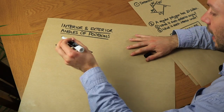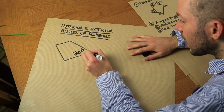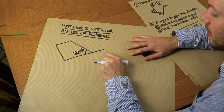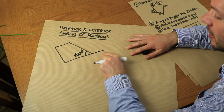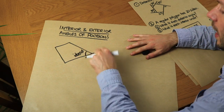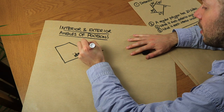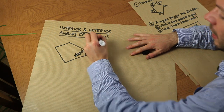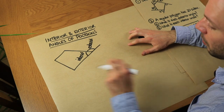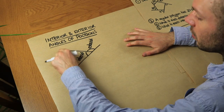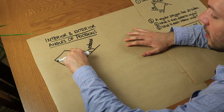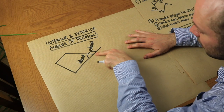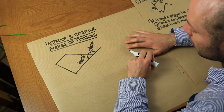Now an exterior angle is formed if we were to extend out one of the edges — it's the angle between that extended edge and the other edge. So this would be known as the exterior angle. An exterior angle is not the total angle outside; it would just be the angle between the extended side and another side.